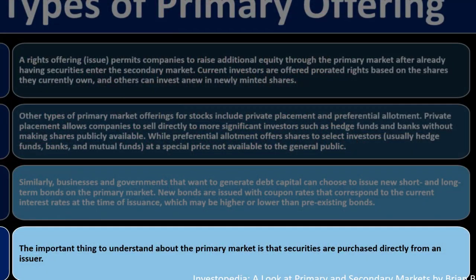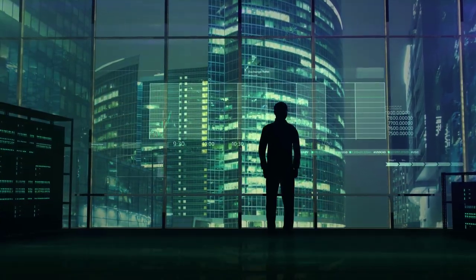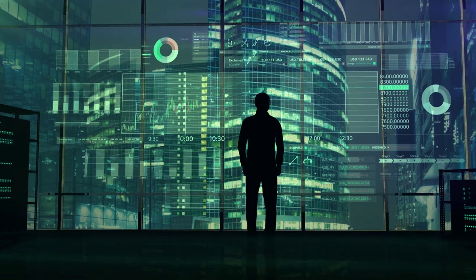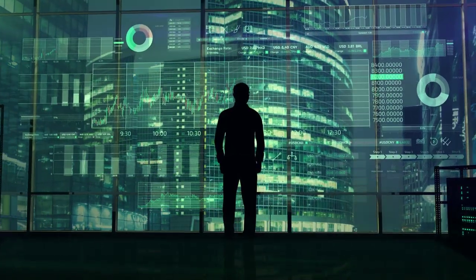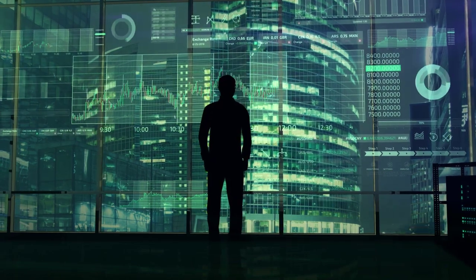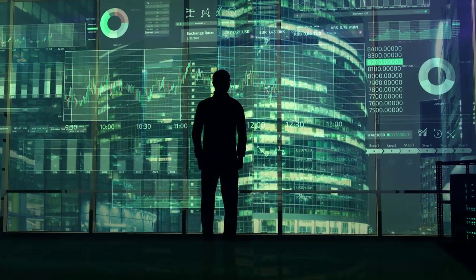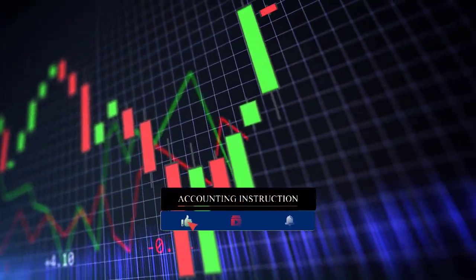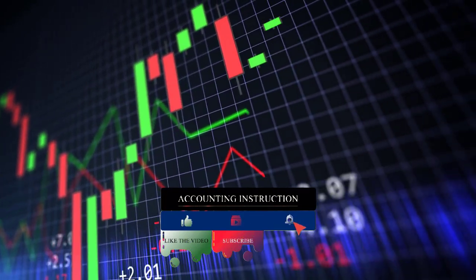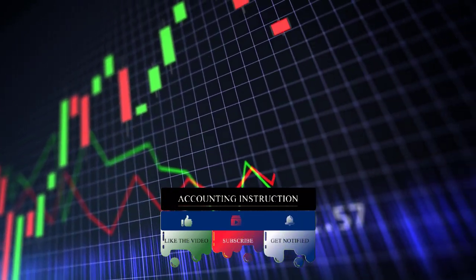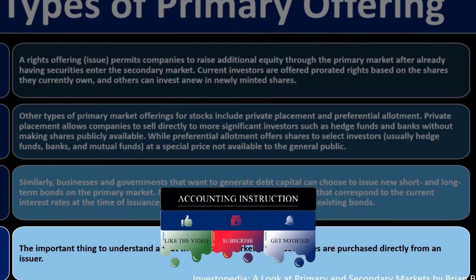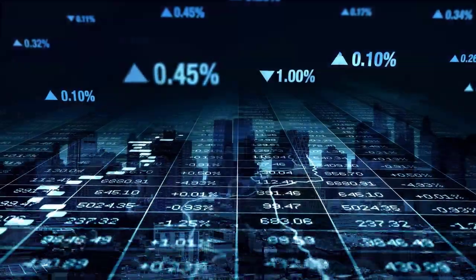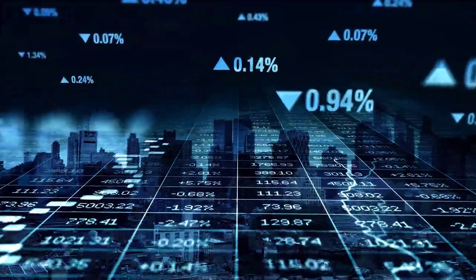The important thing to understand about the primary market is that securities are purchased directly from an issuer — typically the corporation issuing stocks or bonds. Most transactions, however, happen on the secondary market, because the goal of these instruments is to make them uniform in nature so they can be easily compared and traded, increasing the flow and capacity to value these things and allowing money and trust to flow more easily.